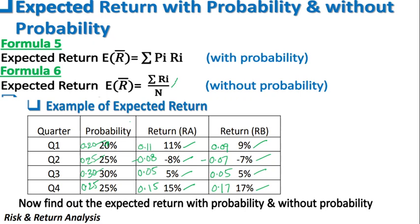So Ri is the total of returns and N is the number of years. This is exactly what we have learned in statistics — X̄, which is the arithmetic mean, that is the average. The average of the returns is called the expected return, indicated as E(R̄). E(R̄) is nothing but the average return of the expected returns given in the problem.